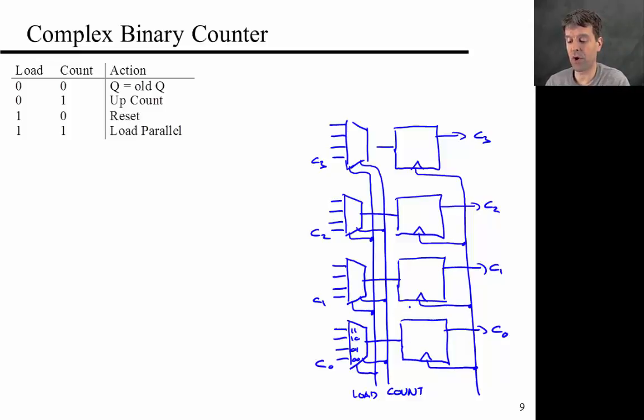Now, for 0,1, I want to do upcount. We've just, on the previous slide, introduced how we do counting. The first, the next state 0, is always the inverse of present state 0. So this would be not C0 that comes in here.